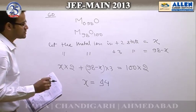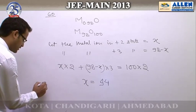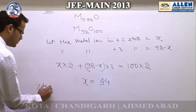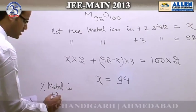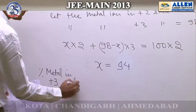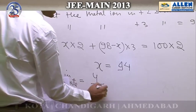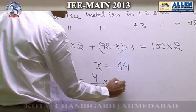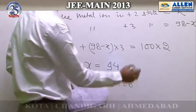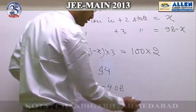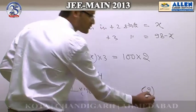This means 4 atoms out of 98 are in the +3 oxidation state. Therefore, the percentage of metal in the +3 state equals (4/98) × 100, which is approximately 4.08%. Looking at the options, option 2 is the correct answer.